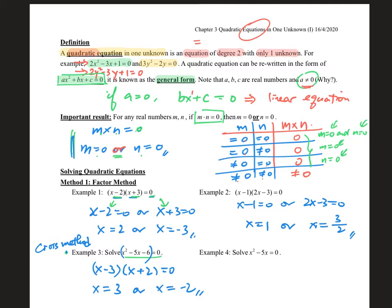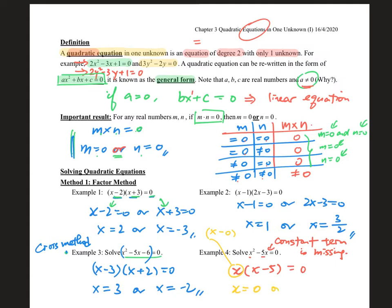In example 4, sometimes we need not use cross method — especially when the constant term is missing. In that case, we just simply take out the common factor rather than using cross method. So it becomes x times (x minus 5) equals 0. We still follow the same way: write the quadratic expression as a product of 2 factors. The only little trick is that x can be interpreted as x minus 0.